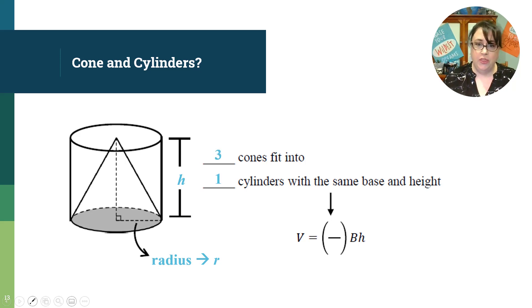Well believe it or not, three cones fit into one cylinder. So if we know that the volume of a cylinder is base area times height, then we know that the volume of a cone is one-third of that. So the volume of a cone is one-third the base area times the height.